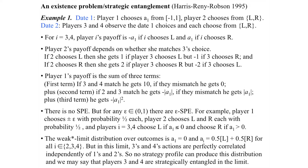Two dates, four players. At date one, players one and two choose simultaneously. Player one chooses a real number between minus one and one. Player two chooses either left or right. At date two, players three and four observe the actions chosen by players one and two, then each chooses either left or right simultaneously. There is no nature in this game.